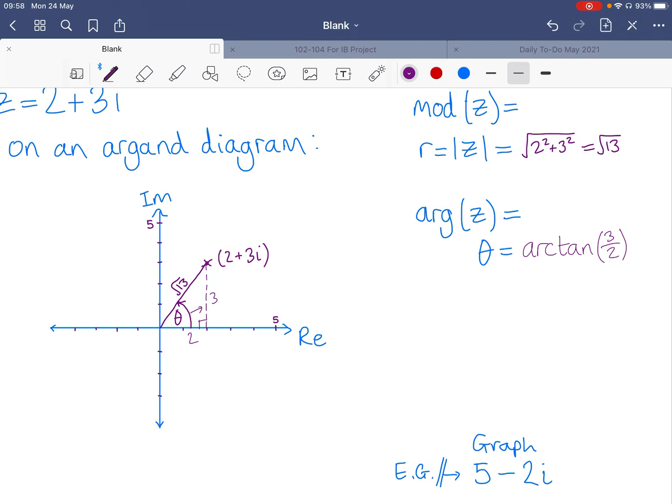In radians, that's going to be 0.983. Which makes sense.